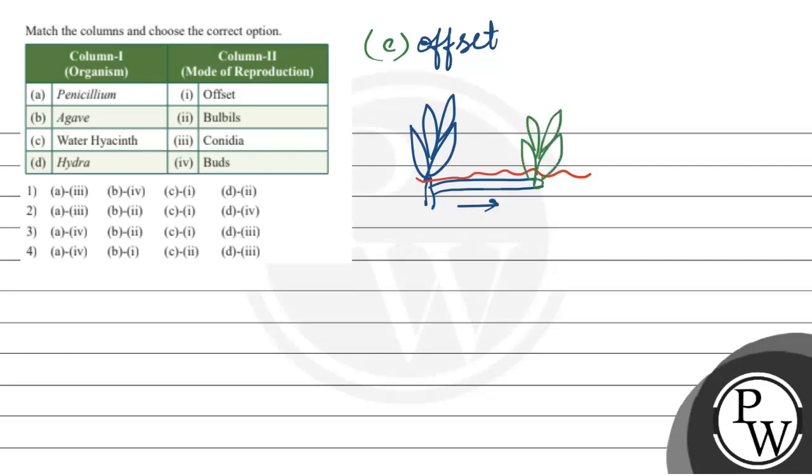This will be a new plant. This is a baby plant. So this stem run, we call it offset. This stem run is called offset, and water hyacinth reproduces through it. So this will match with first.